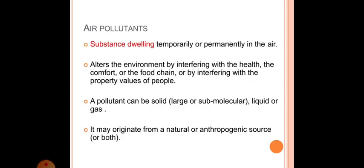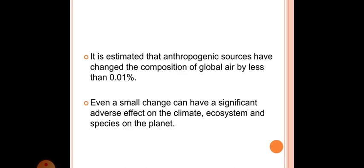Air pollutants: Substance dwelling temporarily or permanently in the air. Alters the environment by interfering with health, comfort or the food chain, or by interfering with property values of people. A pollutant can be solid, liquid or gas. It may originate from natural or anthropogenic sources or both. It is estimated that anthropogenic sources have changed the composition of global air by less than 0.01%. Even a small change can have a significant adverse effect on climate, ecosystem and species on the planet.